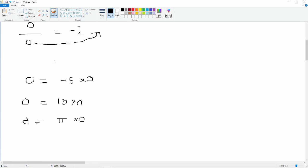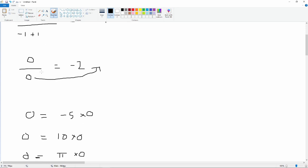So 0 over 0 can be absolutely anything. In algebra, we say 0 over 0 is undefined.